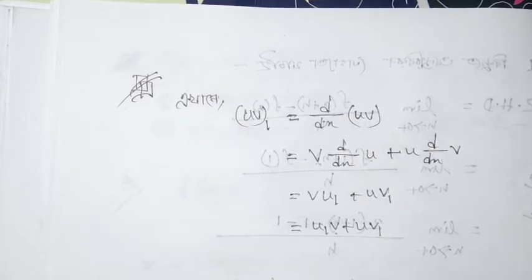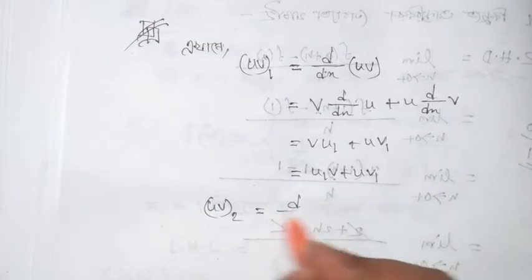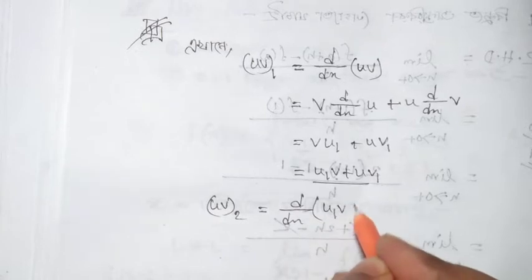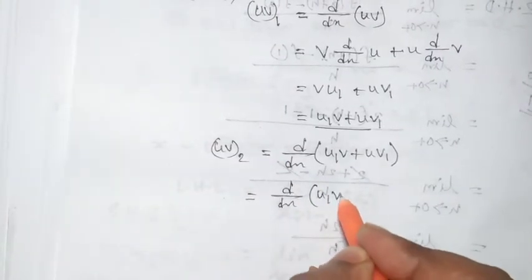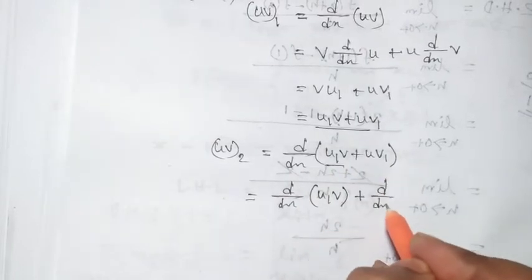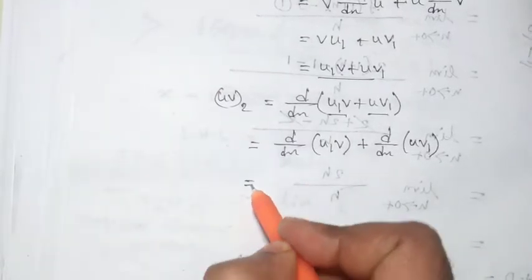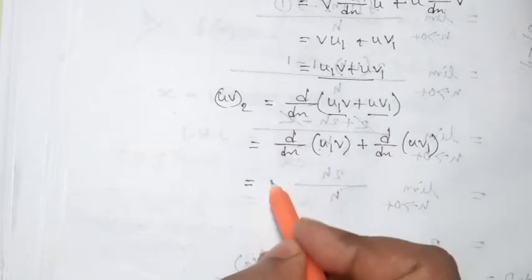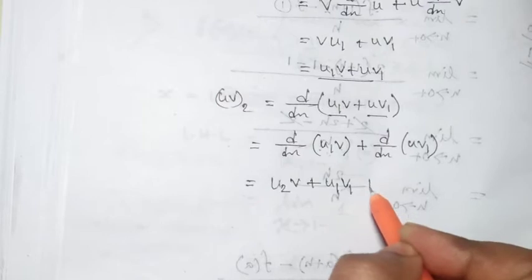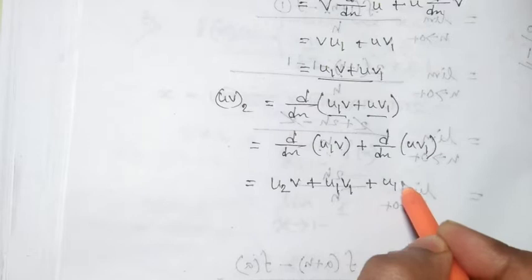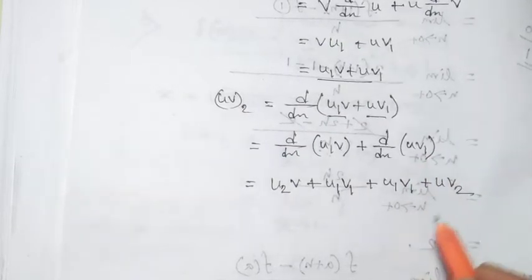If there is an operation the first time, we differentiate once, then we separate it and differentiate a second time, so that we get the second differentiation result. So, if U and V are both present at the same time: